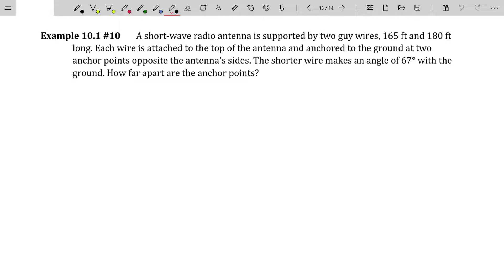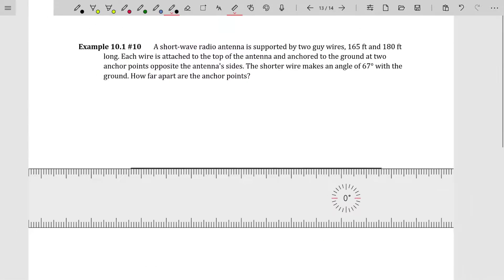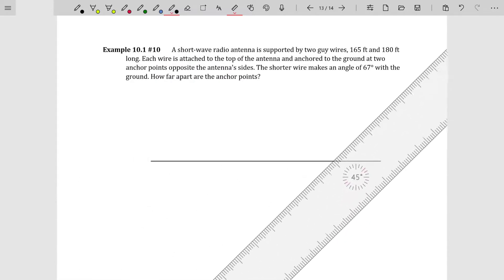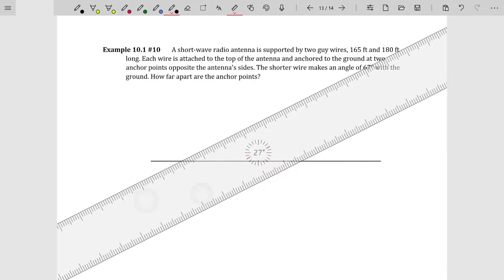A short wave radio antenna is supported by two guy wires, 165 feet and 180 feet long. Each wire is attached to the top of an antenna and anchored to the ground at two anchor points opposite the antenna's sides. The shorter wire makes an angle of 67 degrees with the ground. How far apart are the anchor points? I've read the problem and I kind of understand what's going on, but it'd probably be better if I drew a picture.